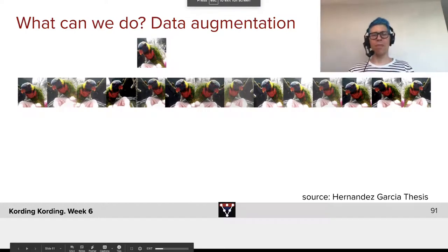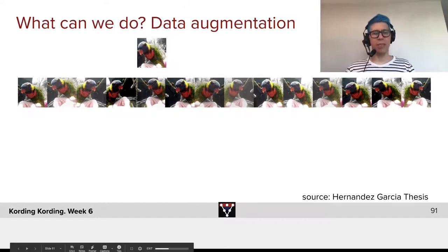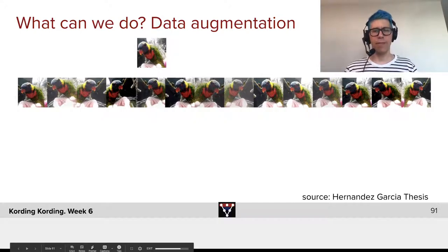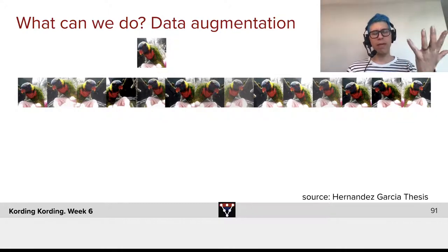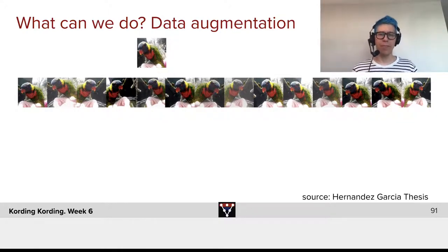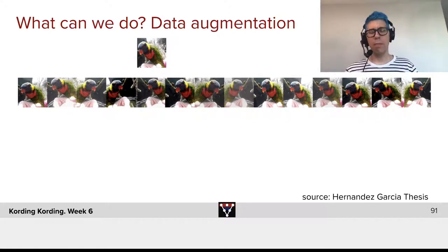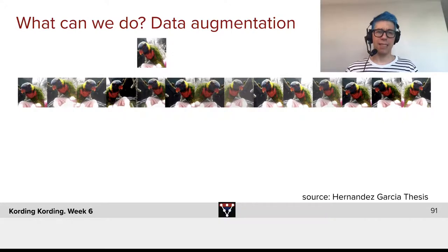Here's another thing that we almost always do, which is data augmentation. Here we have an image of a bird. What can we do so that we have more different training data? Well, for example, we can flip it left-right. Almost all things in the world are the same if we flip them left-right, maybe apart from written text.